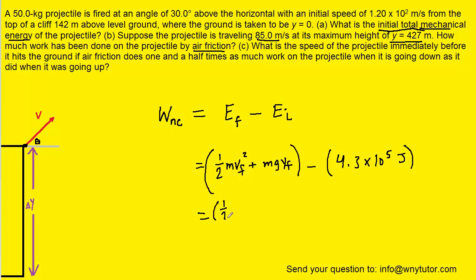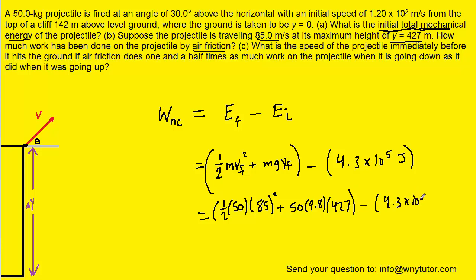We plug in the mass of 50 kilograms, the final speed given as 85 meters per second (don't forget to square it), then mass times the gravitational constant times the final height of 427 meters — rather than the 142 meters from part A. We then subtract the 4.3 times 10 to the fifth joules. When you calculate this, you get negative 3.97 times 10 to the power of 4 joules — the correct answer to part B.